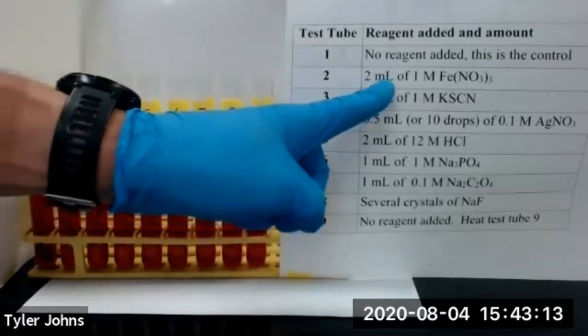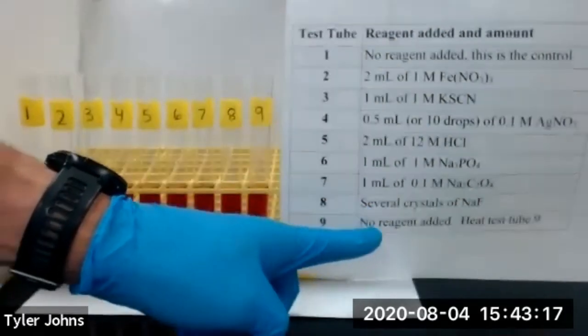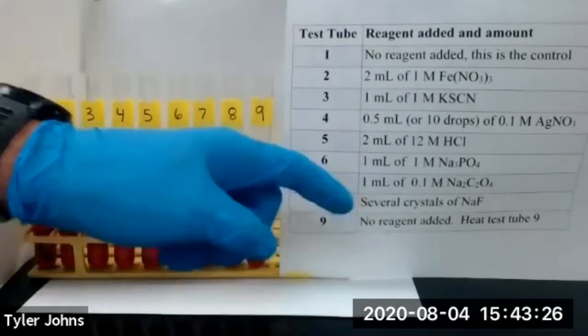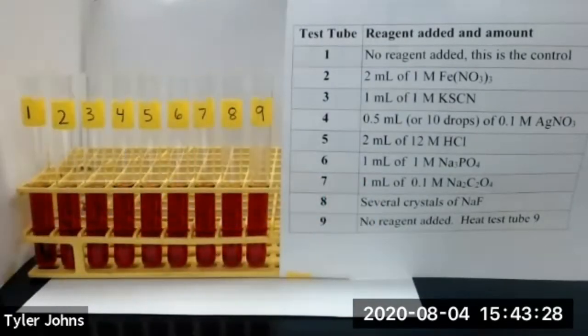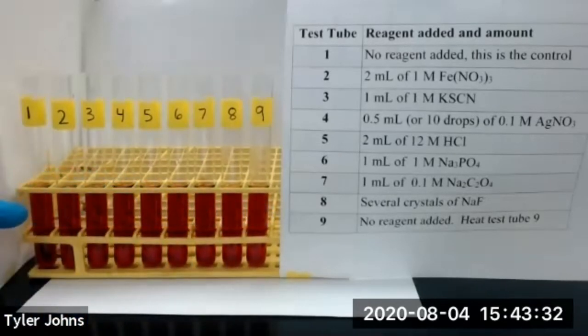We'll add these reagents to test tubes two through eight and test tube nine we will heat. We'll compare the color intensity of test tubes two through nine with the control test tube, test tube number one. You'll need to record observations in terms of Le Châtelier's Principle.